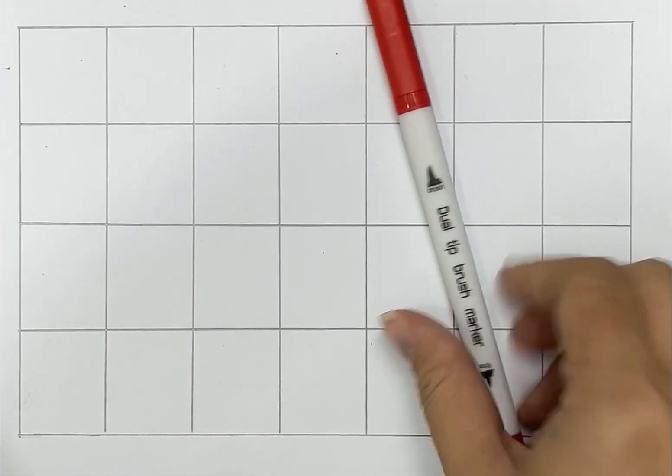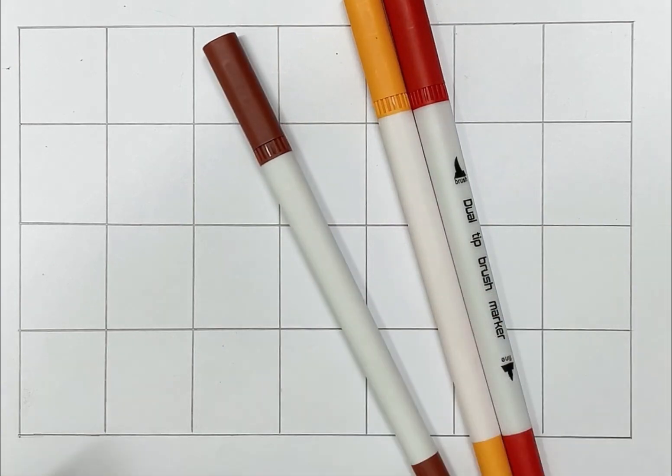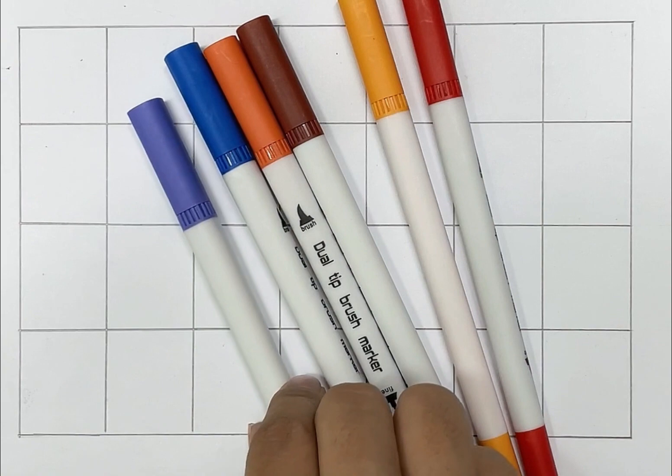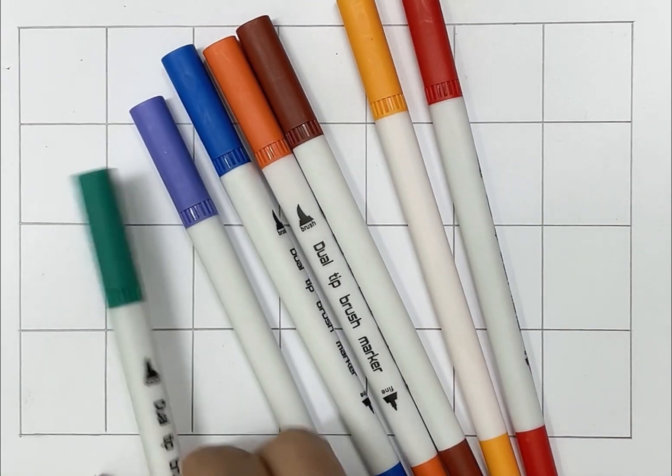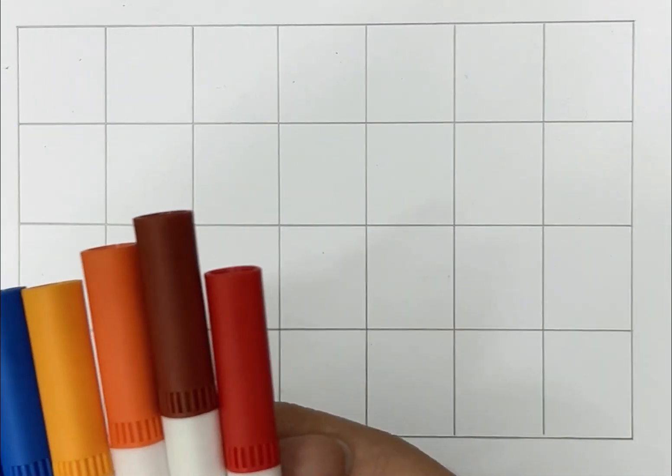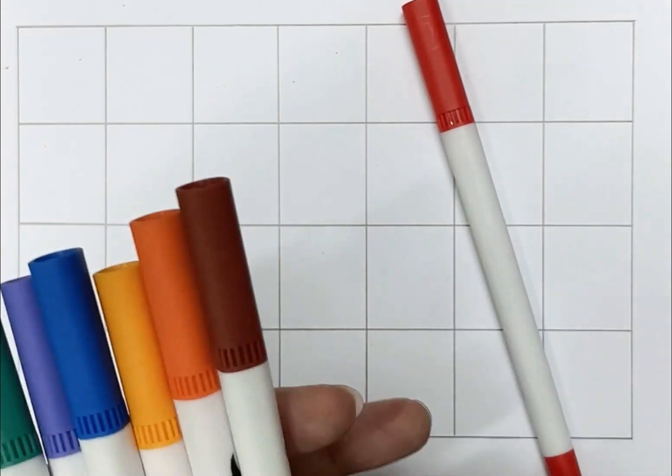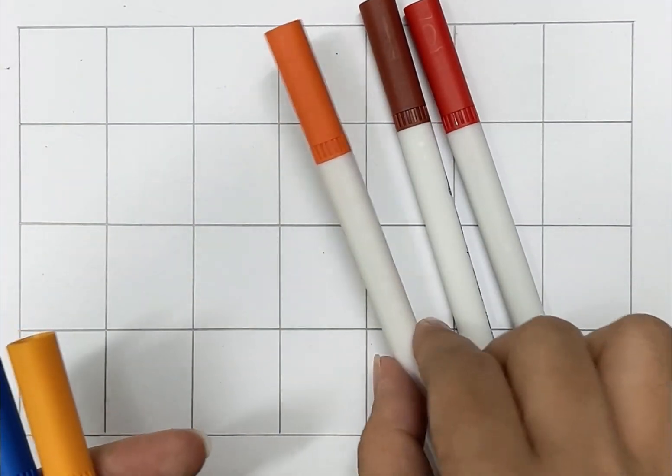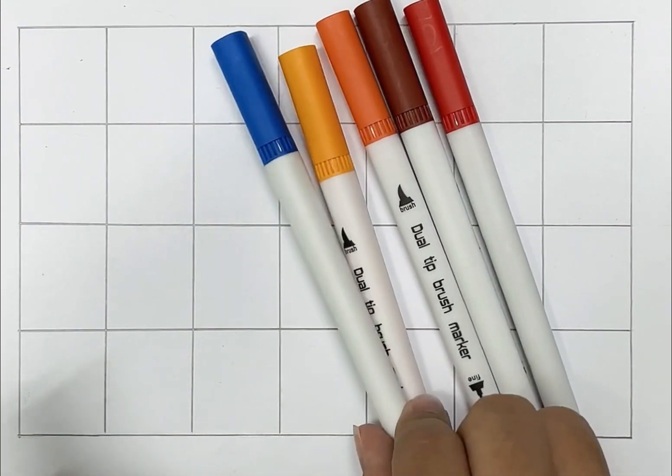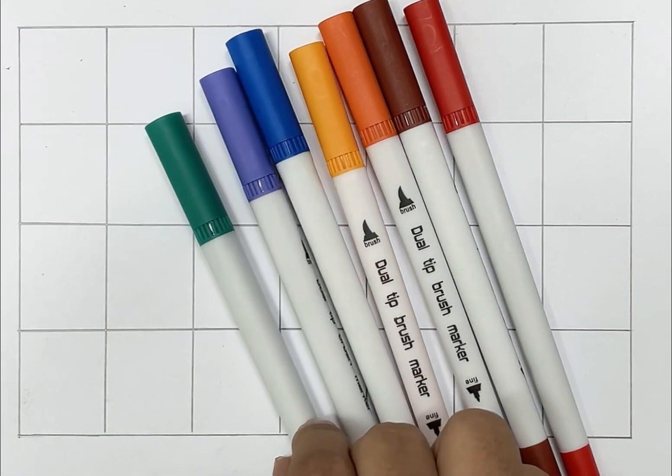Red color, yellow color, brown color, orange color, blue color, purple color, green color. Red, brown, orange, yellow, blue, purple, green.